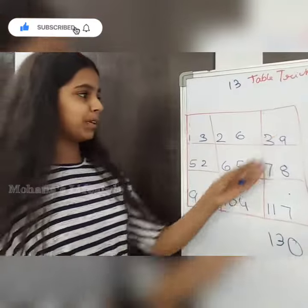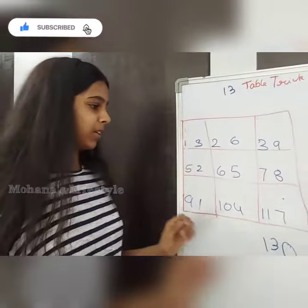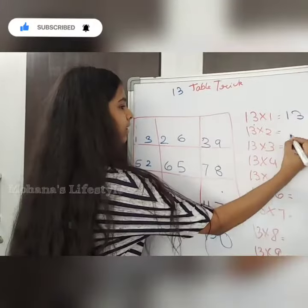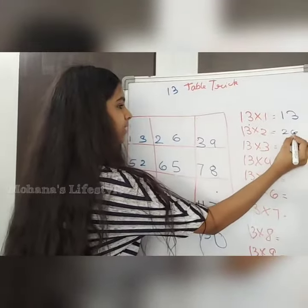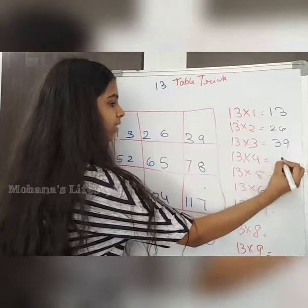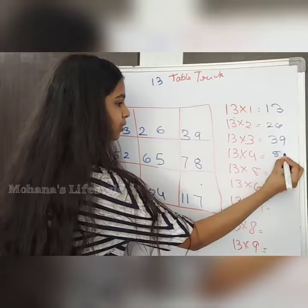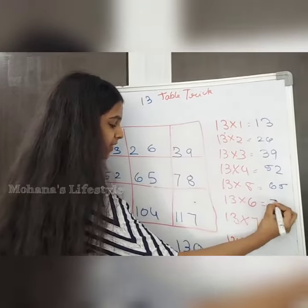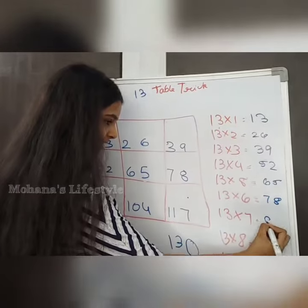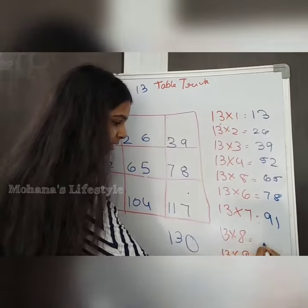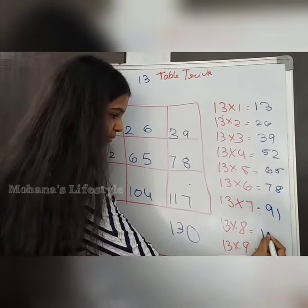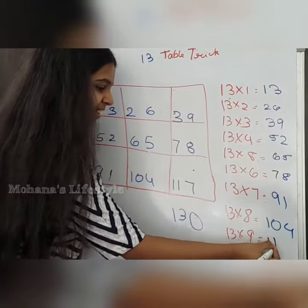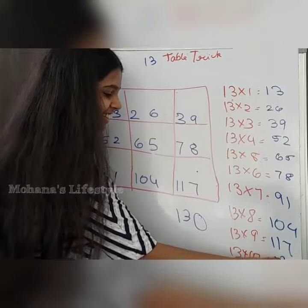Now we are going to place these numbers together to get the results: 13, 26, 39, 52, 65, 78, 91, 104, 117, and 130.